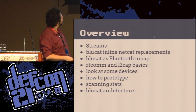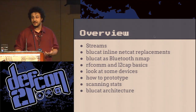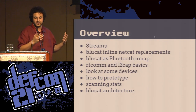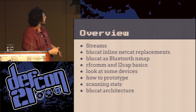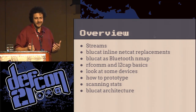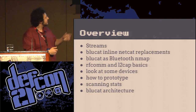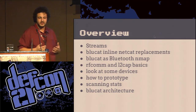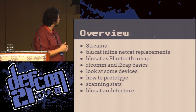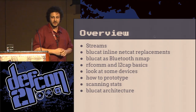The overview: we're going to talk about streams and how they're awesome and fundamental. Then how BlueCat can replace Netcat inline — any situation you can think of using Netcat over an IP address, you can use BlueCat and just replace the IP address with a MAC, and you just have to be in range. We also have BlueCat as a Bluetooth Nmap — scanning and service discovery functions. We'll look at RFcomm and L2CAP, which are the protocols BlueCat understands because they have port numbers you can talk to directly.